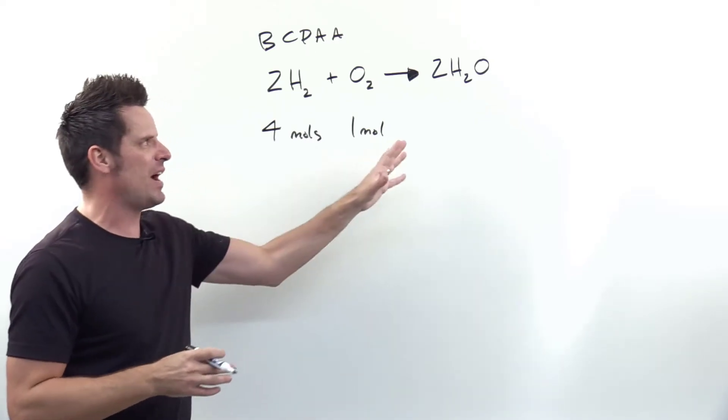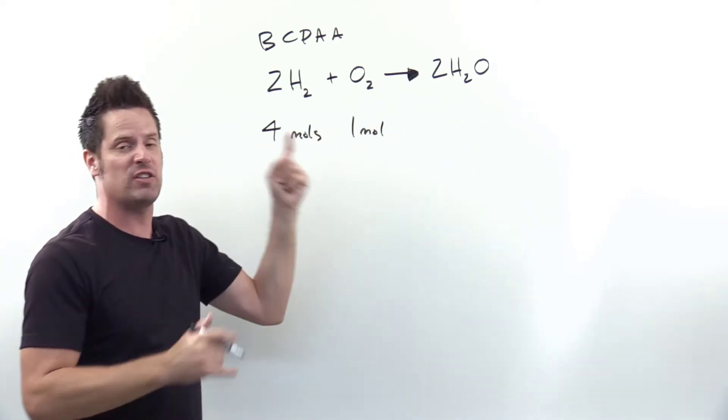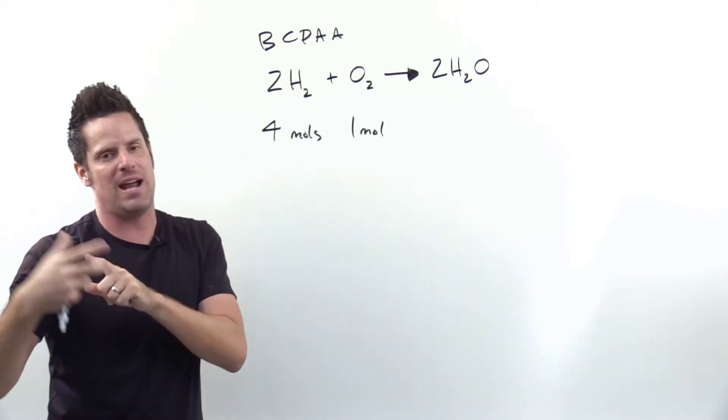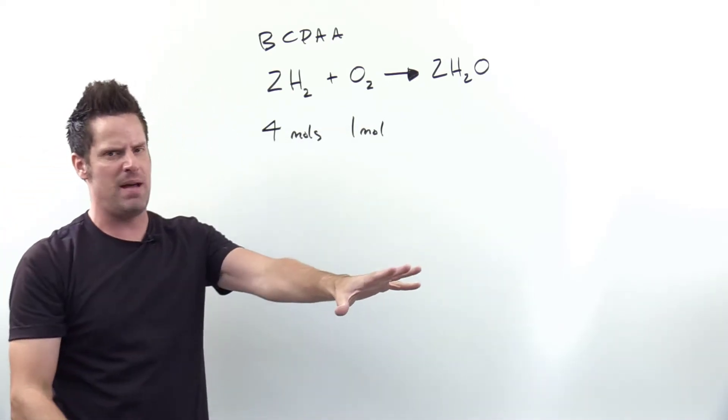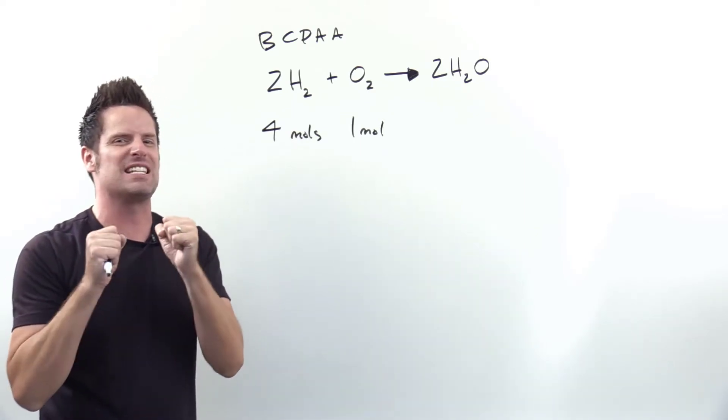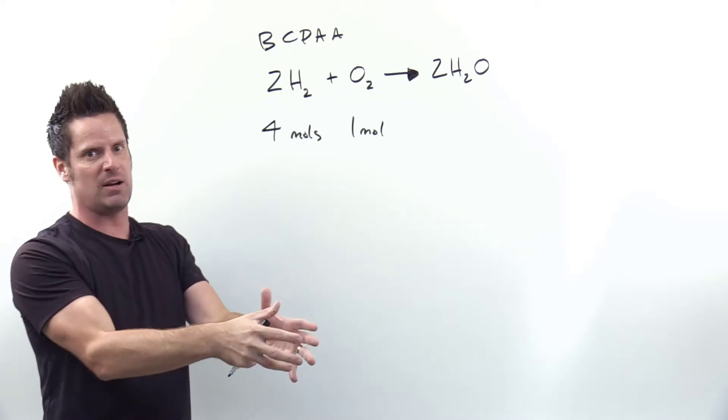BICPA does not by itself identify yields or amounts of product. You have to go through BICPA to identify the limiting reactant first, and then from the limiting reactant you can jump to the amounts of product or products, whatever the case may be. But the purpose of BICPA is essential because everything comes from limiting reactant.